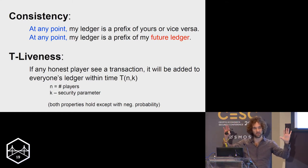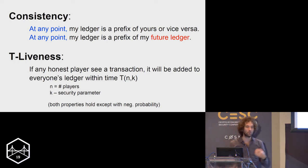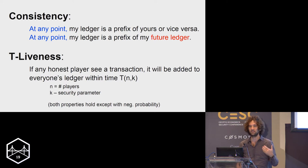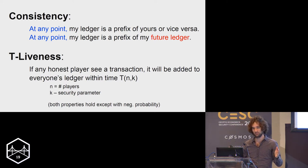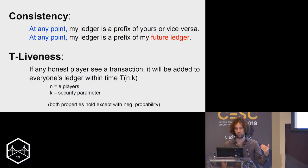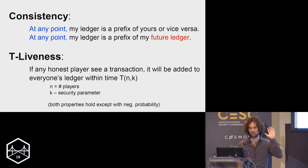The second property, liveness, says that whenever some honest node sees a transaction that should be added to the ledger, everybody's ledger will contain it within some bounded time t. This bounded time could be a function of the number of players, some security parameter, and maybe a network delay parameter. The key property is that whenever someone wants to add something, it should get added within, say, one minute, and everybody should have it in the ledger.